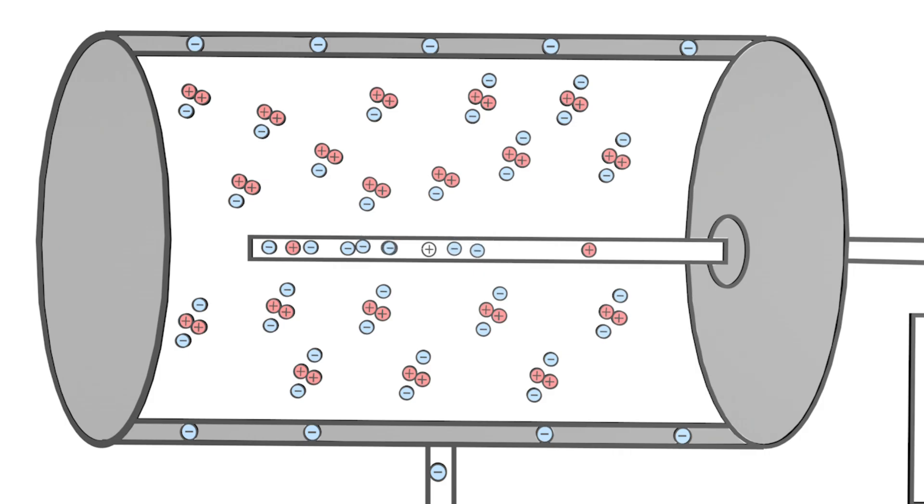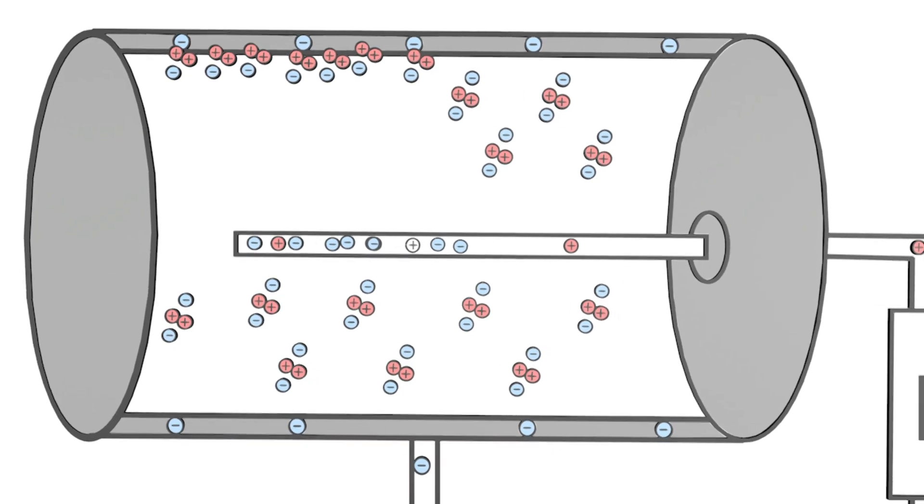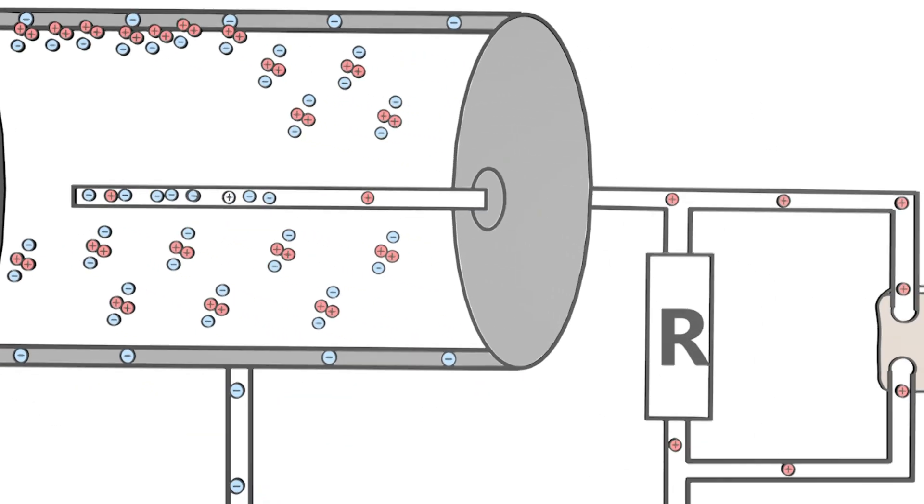The now positively charged noble gas atoms are attracted to the negatively charged cylinder wall, where they recombine with electrons, so that they are neutrally charged again. The electrons in the wire now flow to the positive pole of the connected power supply unit.